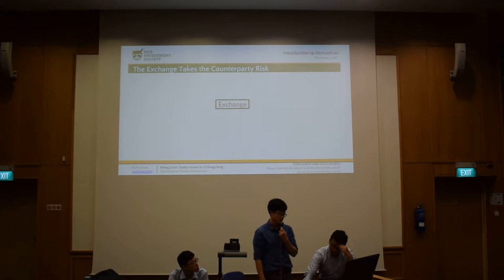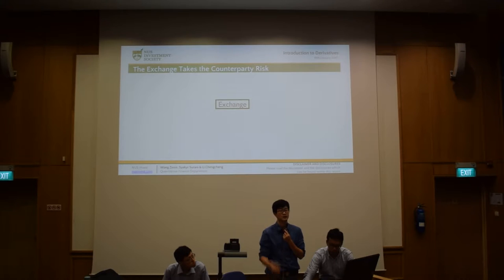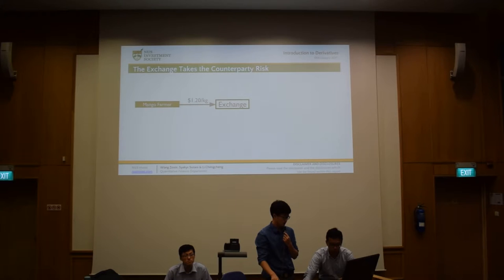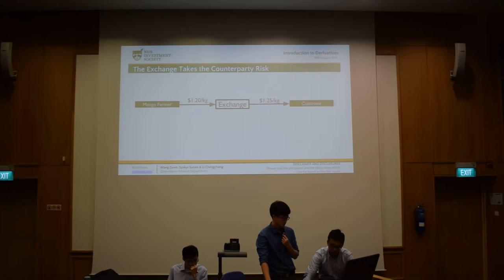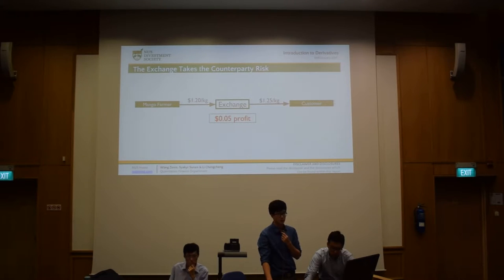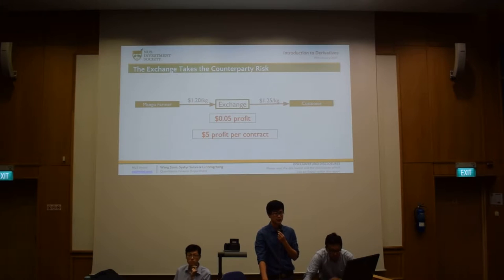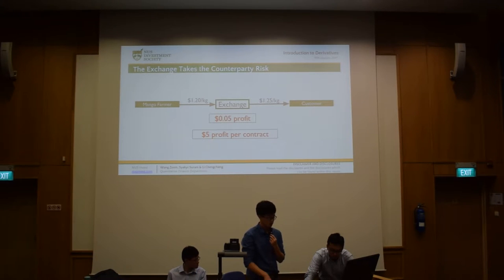You might wonder why the exchange is willing to take on all the counterparty risk. The first reason is that the exchange stands to gain profit. For example, the exchange tells sellers to deliver at $1.20 and buyers to enter at $1.25 per kilo. At settlement, the exchange makes a profit of $0.05 per kilo — on a contract of 100 kilograms, that's $5 per contract. This $5 is what we call the spread, and the exchange makes this profit every time a futures contract is settled.